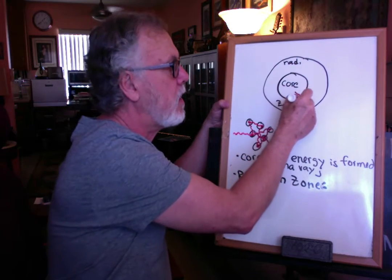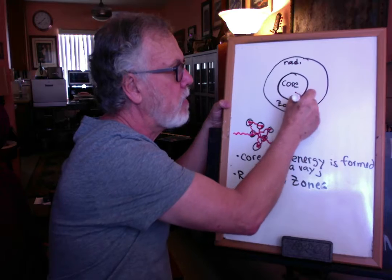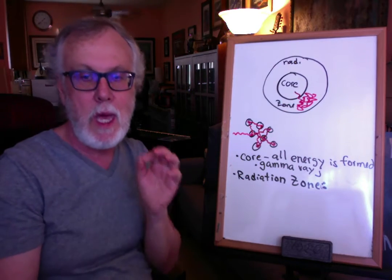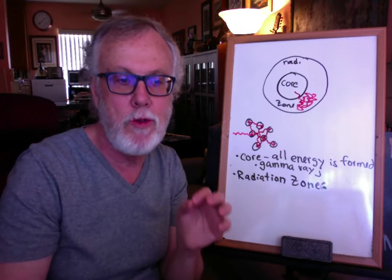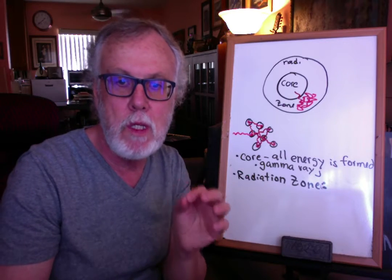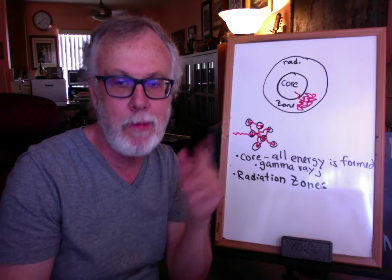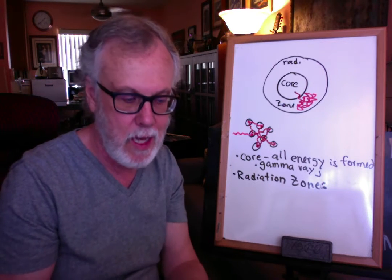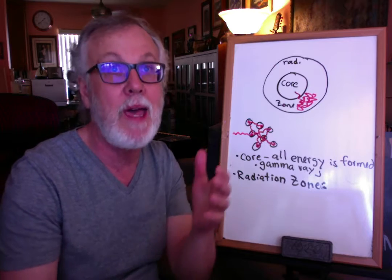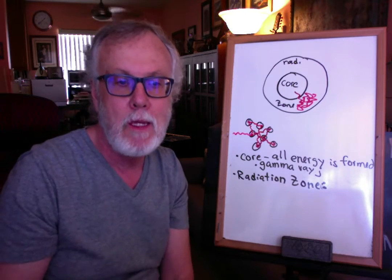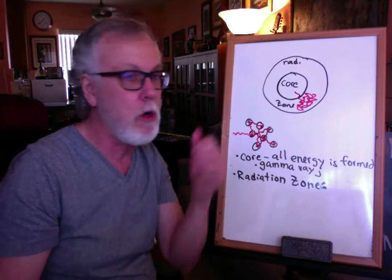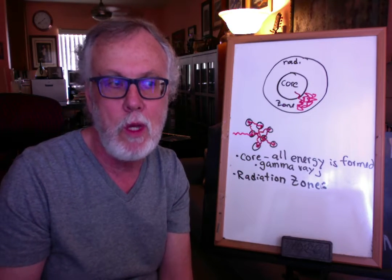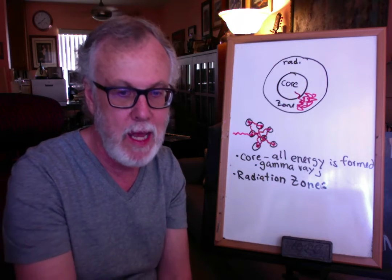It comes in and just bounces around, bouncing for a long time. It may take between 100,000 to a million years for energy to actually escape that region. So when you go out on a nice sunny day, the light you observe coming from the Sun is actually very ancient — it was formed within the core between 100,000 to a million years ago until it finally made it out of that region.